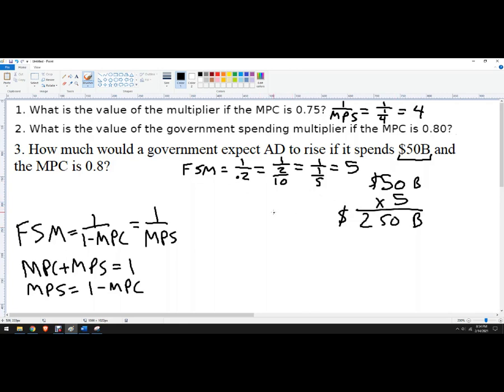So that's the step. Calculate the simple fiscal spending multiplier, multiply it by the amount of the spending, and that gives you your aggregate demand increase estimate, assuming no corruption or leakage.